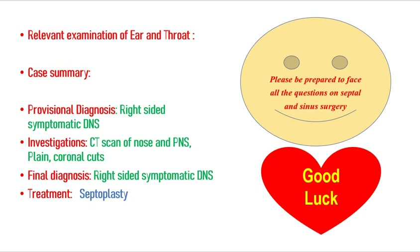Now we have to be ready for the case summary, which includes chief complaints, relevant history of present illness — all positive — relevant family history, drug history, and relevant clinical examination with all positive findings. By that you will make a provisional diagnosis. The provisional diagnosis is left-sided symptomatic DNS, but since the person is having DNS to the left side, that is left-sided DNS, and maybe right-sided inferior turbinate hypertrophy. The examiner may ask what investigations are to be performed. Usually you don't require any investigations, but the gold standard investigation for nose and PNS is CT scan of nose and PNS in plain and coronal cuts. Sometimes axial cuts also, but for DNS only, we don't require axial cuts.